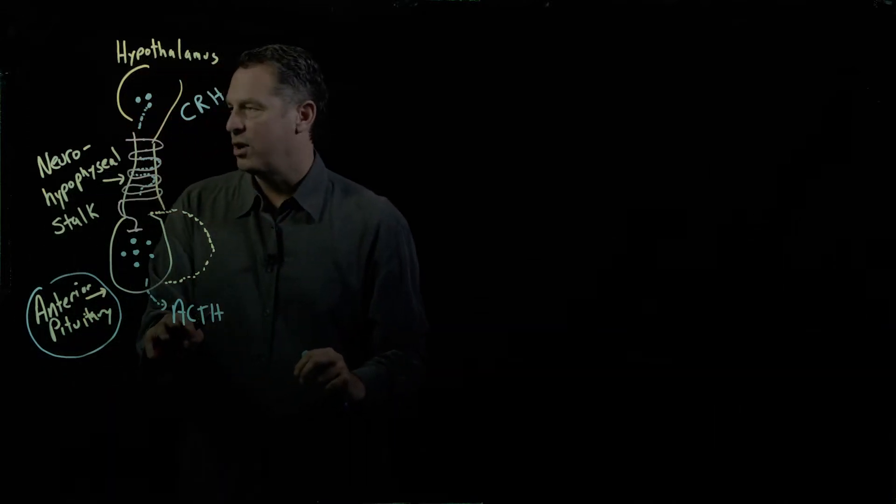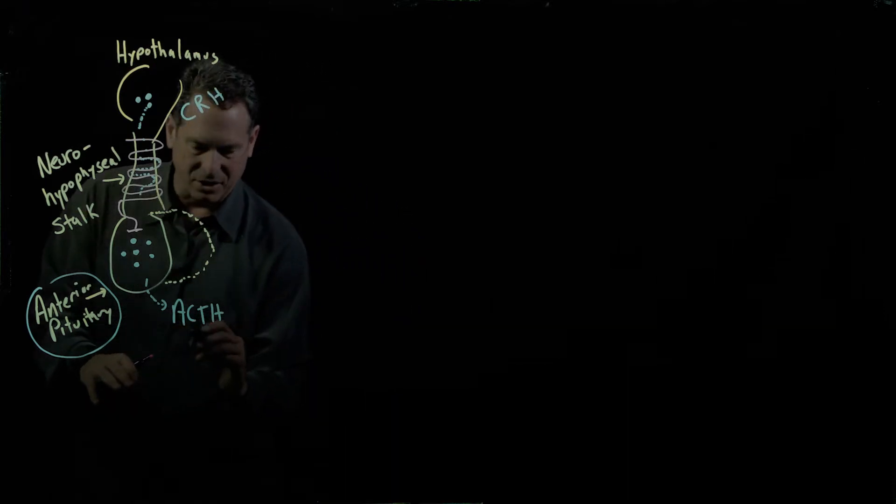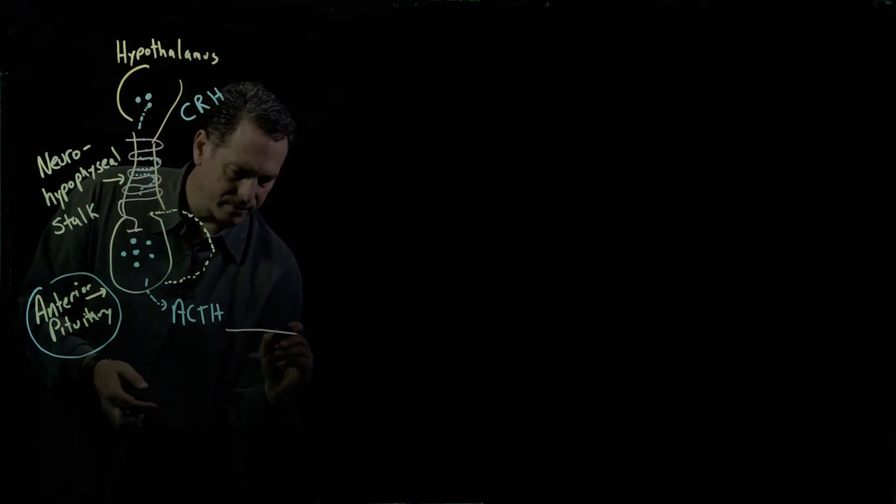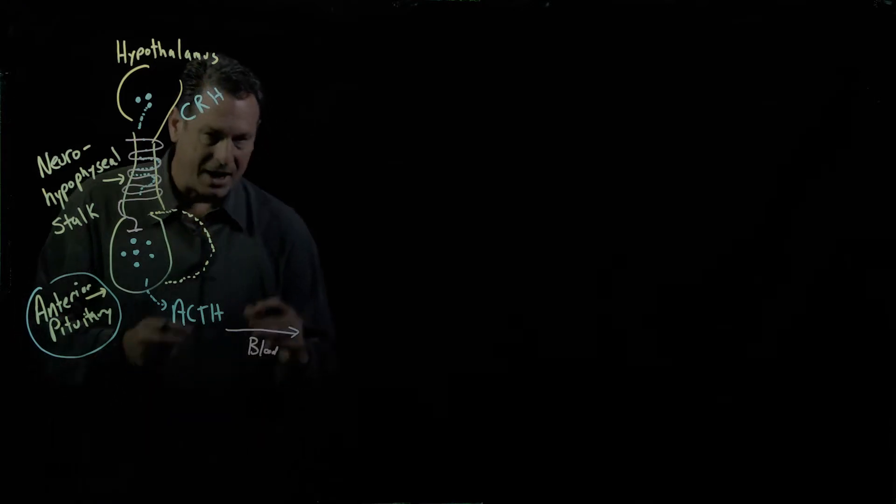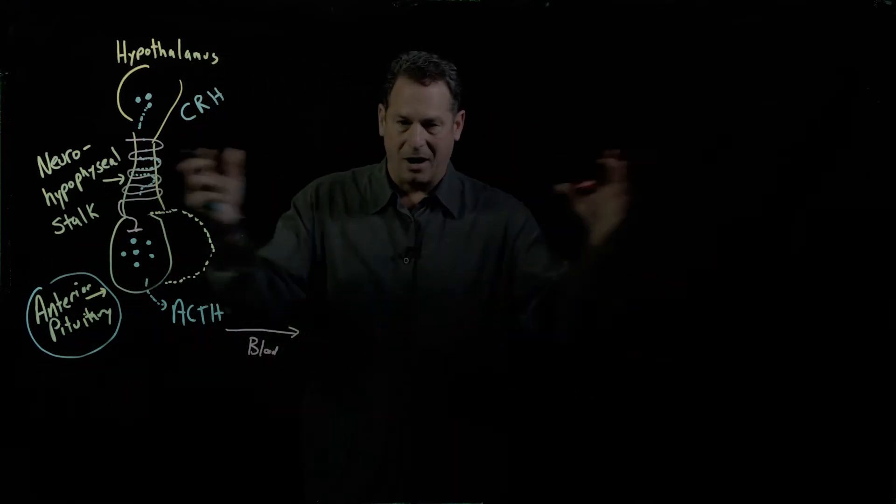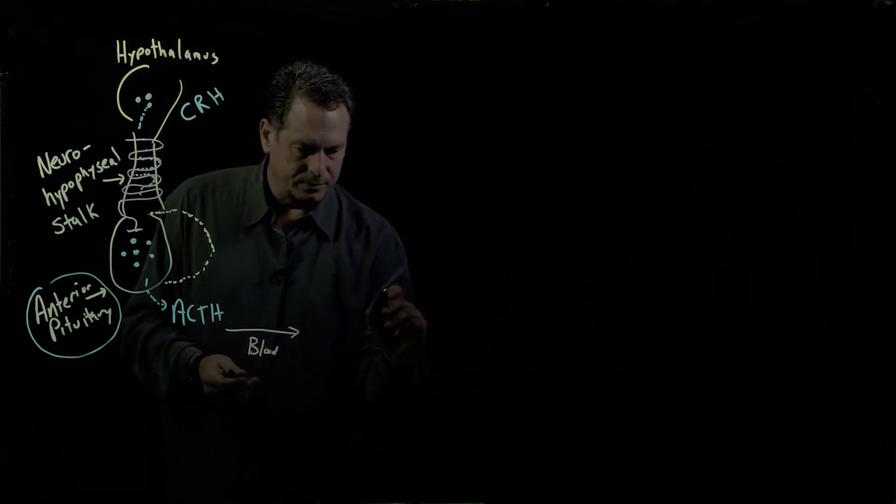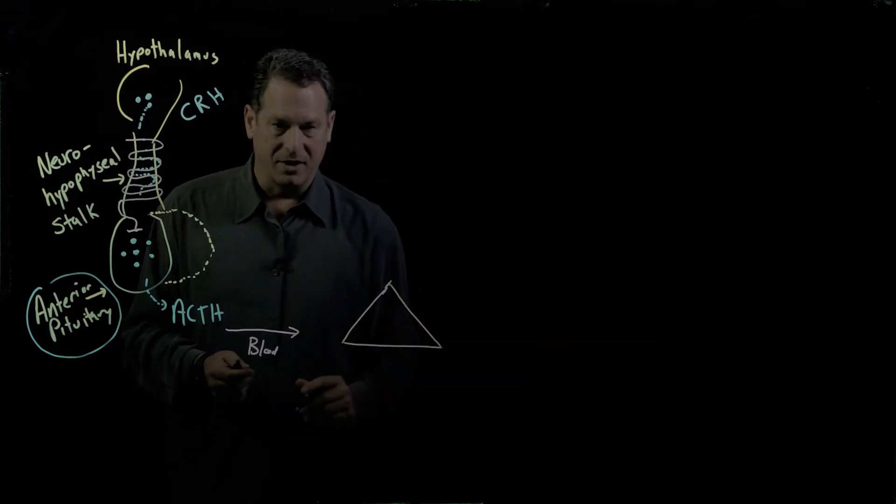ACTH is adrenocorticotropic hormone, and what that does is it enters the systemic circulation, it enters the blood, and it gets pumped distally from the pituitary out to remote sites. Enter the adrenal glands right above the kidneys.